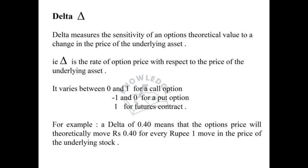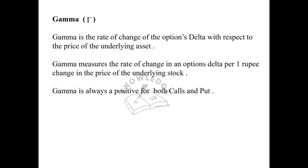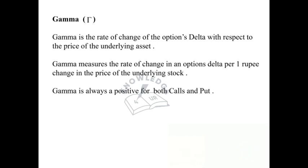The next is Gamma. Gamma is the rate of change of an option's delta with respect to the price of the underlying asset. Gamma measures the rate of change in an option's delta per 1 rupee change in the price of the underlying stock. Gamma is always positive for both calls and puts.